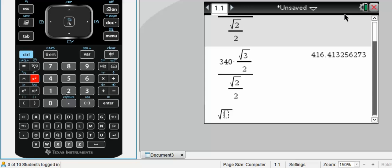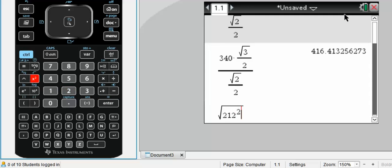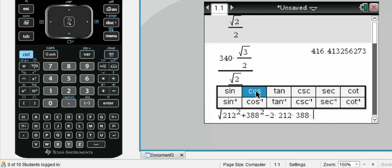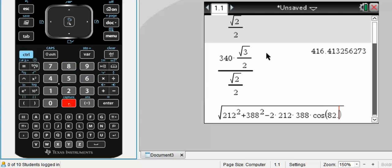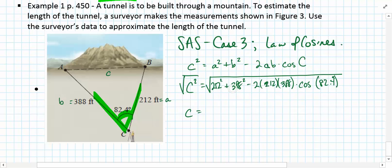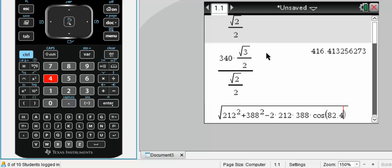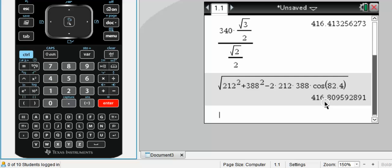So I'm going to set up the square root of 212 squared plus 388 squared minus 2 times 212 times 388 times cosine of 82.4 degrees. I'm just going to verify that I have everything correct here. I think this looks pretty good. We'll press enter and see what we get, and our end result here is 416.8096.